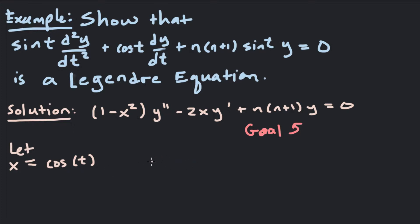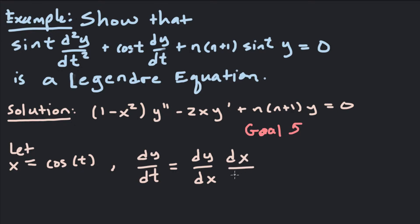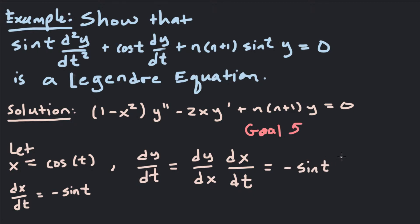Keeping this substitution in mind, we can say that dy/dt would be equal to — using the chain rule — dy/dx times dx/dt. Now dx/dt I can calculate: dx/dt is equal to negative sine of t. So this would be equal to negative sine t times dy/dx. That's what dy/dt is.